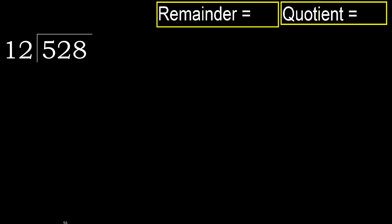528 divided by 12. 5 is less, therefore next. 52 is not less, therefore we work with 52. 12 multiplied by which number is nearest to 52?